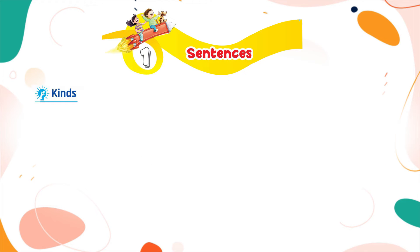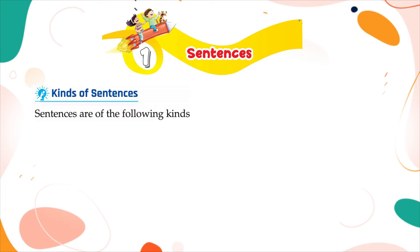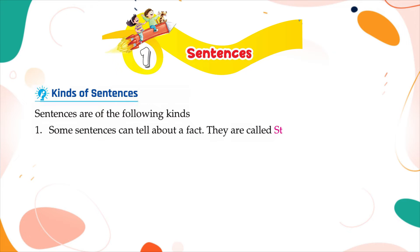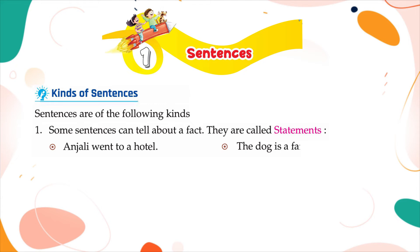Kinds of Sentences. Sentences are of the following kinds. Some sentences can tell about a fact. They are called statements. For example: 'Anjali went to a hotel.' 'The dog is a faithful animal.'